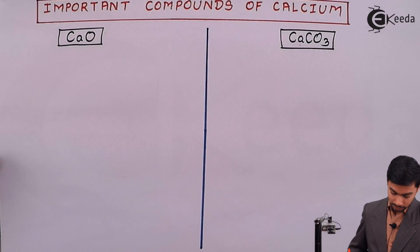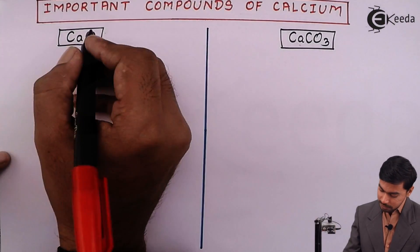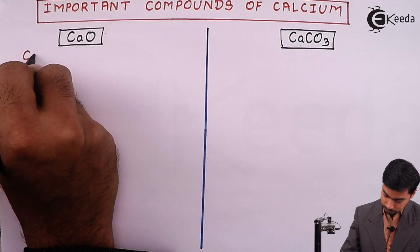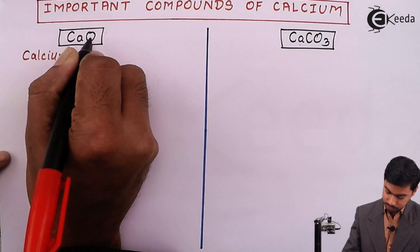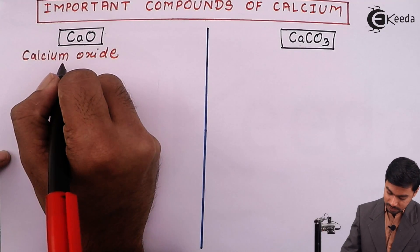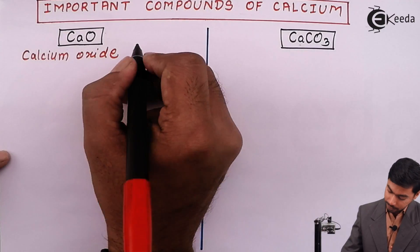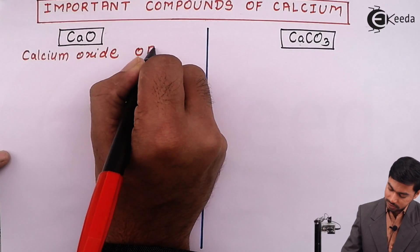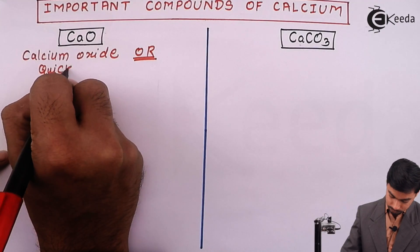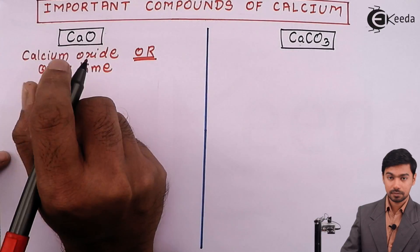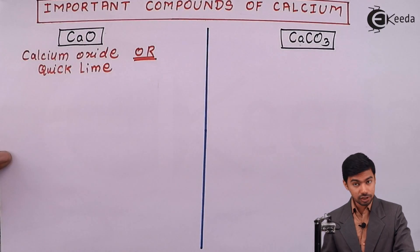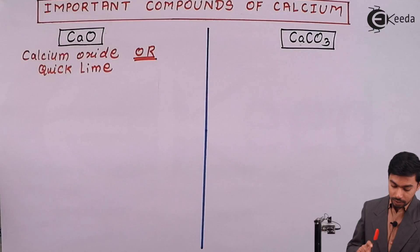We are going to study two compounds in this chapter: one is CaO and one is CaCO₃. Let us start with the first compound, that is CaO. Ca stands for calcium and O stands for oxygen, so this is nothing but calcium oxide. Instead of calcium oxide, we can also call it quicklime. So for CaO we can say calcium oxide or quicklime.